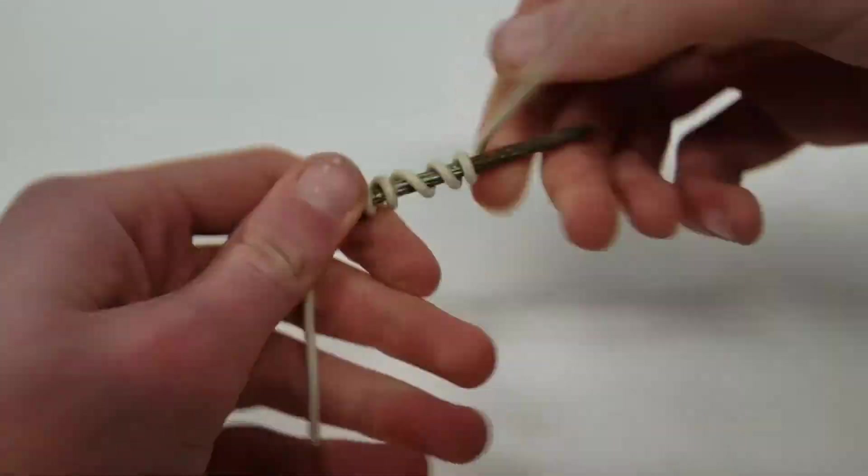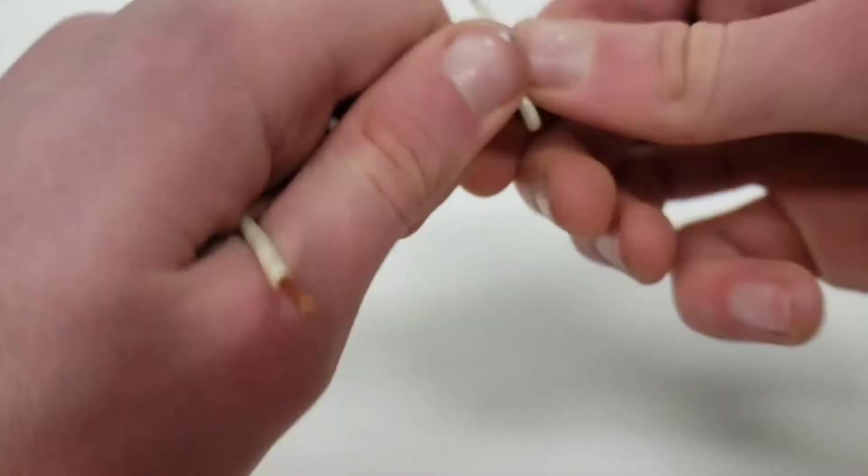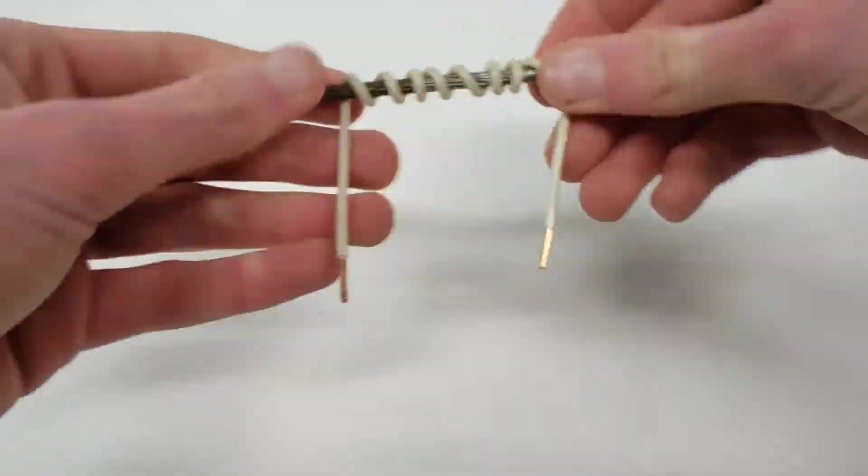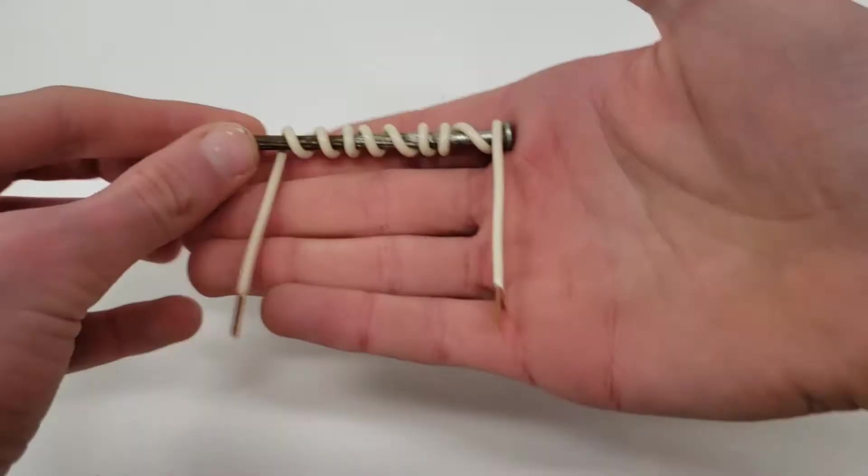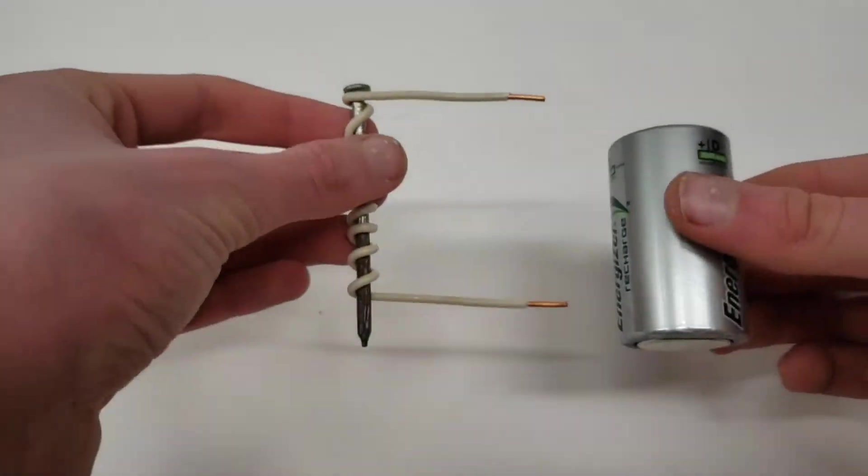But then keep going until you have just a few inches left at the end so you have the equal amount hanging off of both ends. This is on a pretty small scale but just like that, and it should fit onto the battery like that.